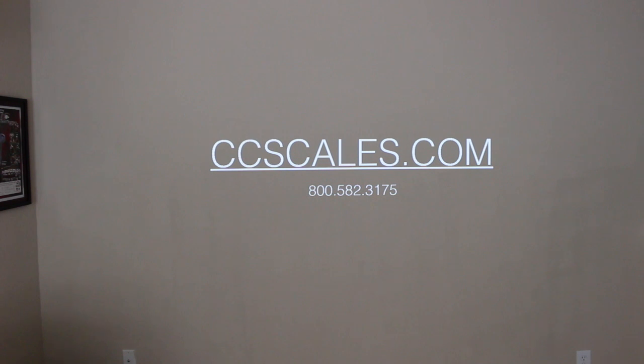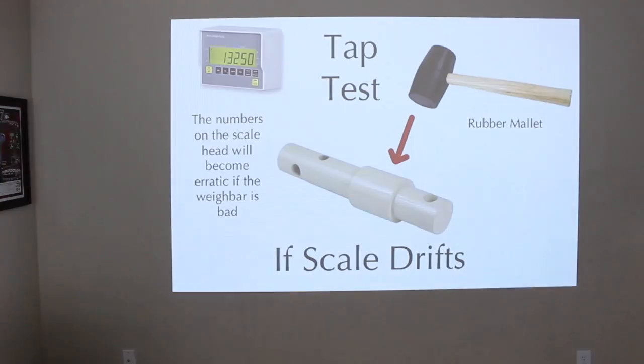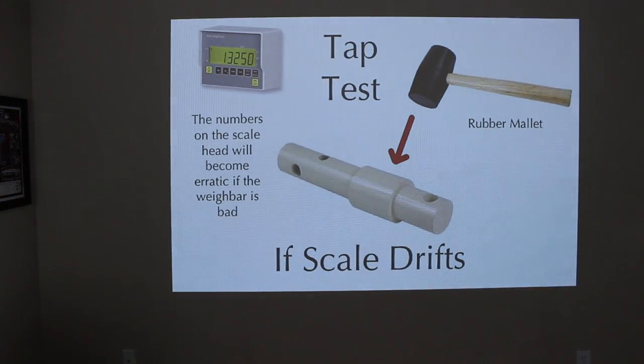First thing to do is always weigh around on the equipment first. If you do this, you can kind of tell where the problem would lie. So if you see one spot that is weighing completely light or heavy, or is giving you an error message or anything like that, try to eliminate the problem.